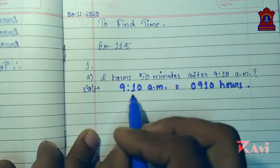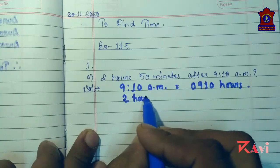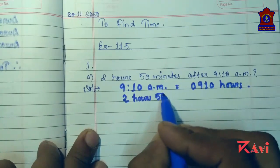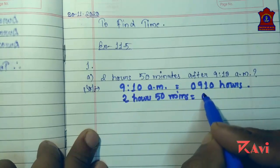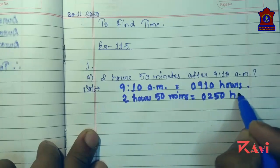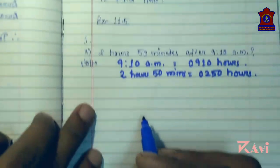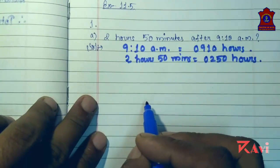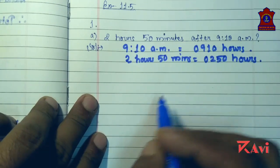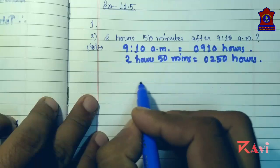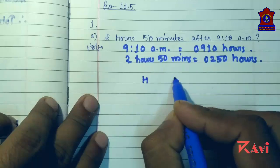And 2 hours 50 minutes will be equals to 0250 hours. We can write it like this. We will be using the same method that you had done in exercise 11.1 — create a column for hours and minutes.